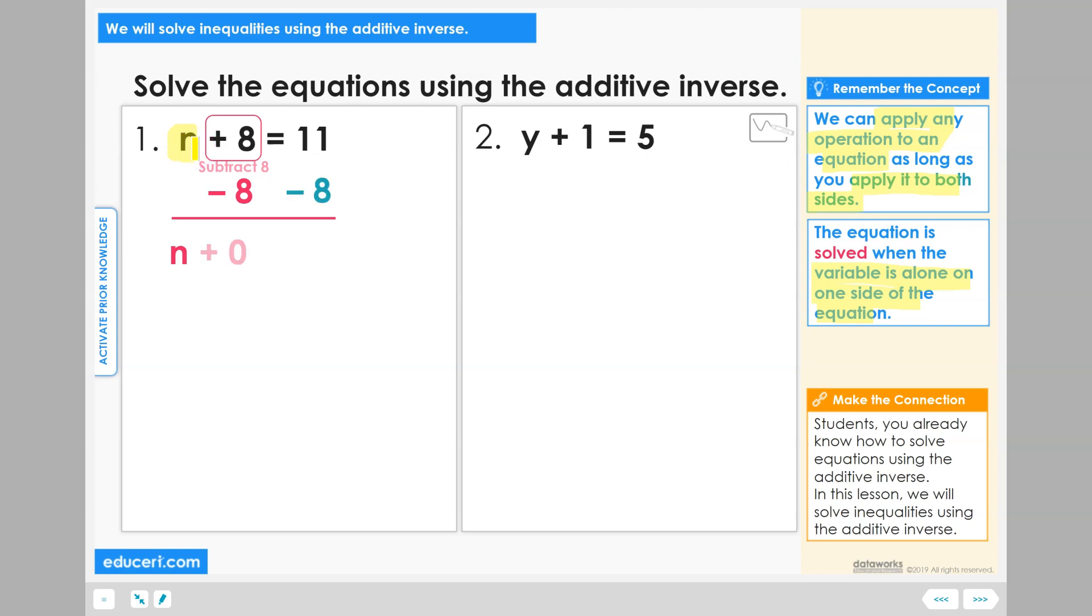I now have n plus 0 on the left hand side and 11 minus 8 equals 3 on the right hand side. And n plus 0 is the same as just n, so I have the variable solved: n equals 3.